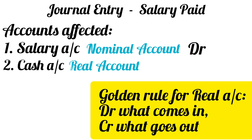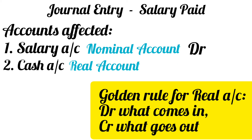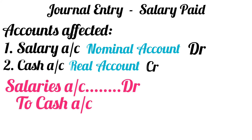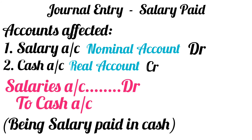The golden rule for real accounts is: debit what comes in, credit what goes out. In the case of salary paid in cash, cash goes out of the business, hence the cash account will be credited. So the journal entry becomes: Salaries Account debit to Cash Account. The narration will be 'Being salary paid in cash.'